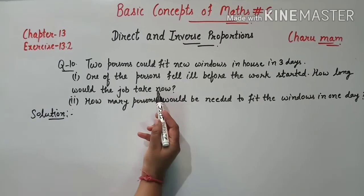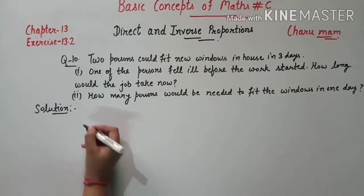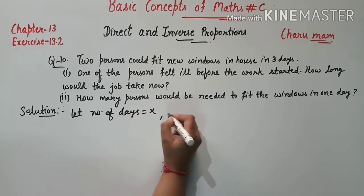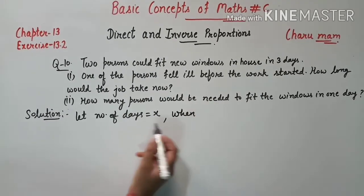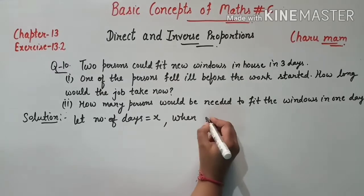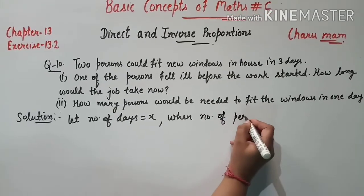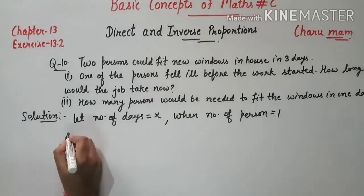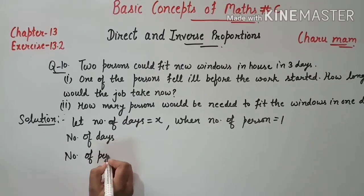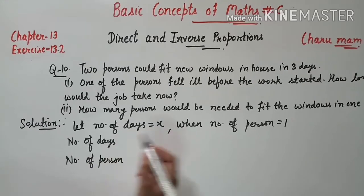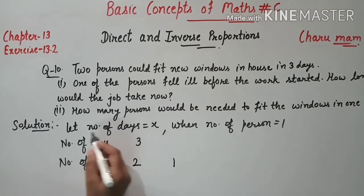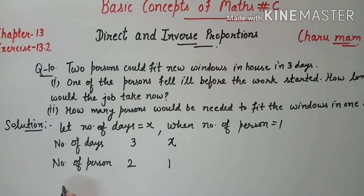We start the solution of Question 10. First part: हमें number of days find करने हैं — let number of days = x. Person पहले 2 थे, उनमें से एक बीमार हो गया तो number of persons = 1. हम table form करेंगे number of days and number of persons। Given: 3 days में 2 persons — number of days 3 और persons 2। अगर persons 1 हैं तो number of days = x।